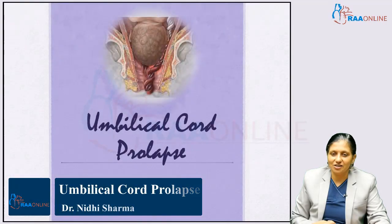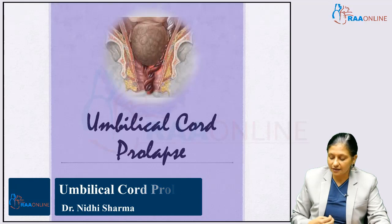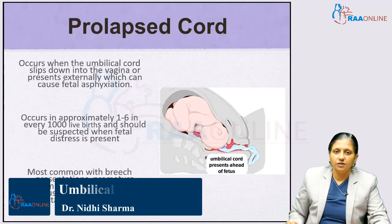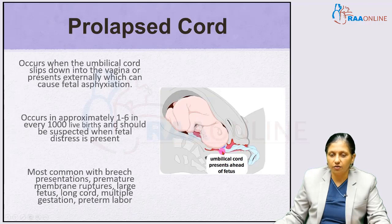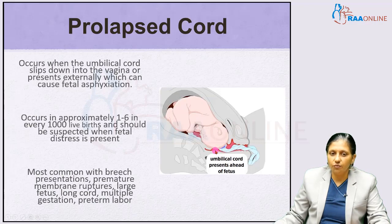Welcome to RAW online. Today's topic is umbilical cord prolapse. A prolapsed cord occurs when the umbilical cord slips down into the vagina or presents externally, and the pressure of the fetal head on the cord can cause fetal asphyxiation. It occurs in approximately one in every 1000 live births and should be suspected when fetal distress is present.